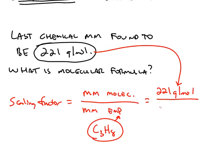You can calculate the molar mass using the periodic table. 3 moles of carbon plus 8 moles of hydrogen gives you 44.11 grams per mole.